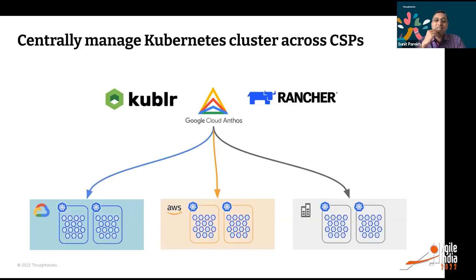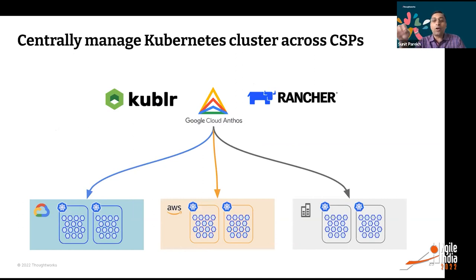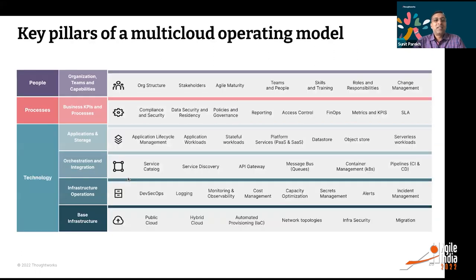For managing Kubernetes clusters across CSPs, many tools are available. Rancher was an early option; Google Anthos is moving fast in the space, letting you manage Kubernetes clusters across multiple cloud service providers including on-prem. If the plan is to move all workloads to containers, Google Anthos could be a very powerful strategy — especially if GCP is already in your list of cloud service providers.